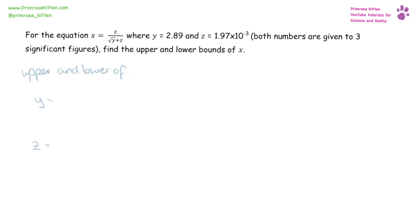First thing we need to do is to find the upper and lower of y and z, so y is 2.89 and z is 1.97 times 10 to the minus three. And these are both given to three significant figures.